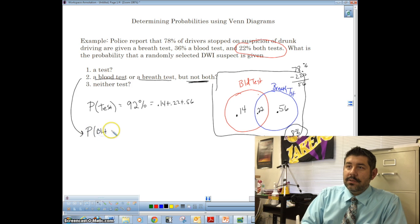Okay. Blood test or breath test, not both. Well, I think you can see already what's going to happen, right? This is the blood test, this is the breath test, this is both. We don't want to include 0.22, so we're going to have 0.14 plus 0.56, which is 56, 72%.